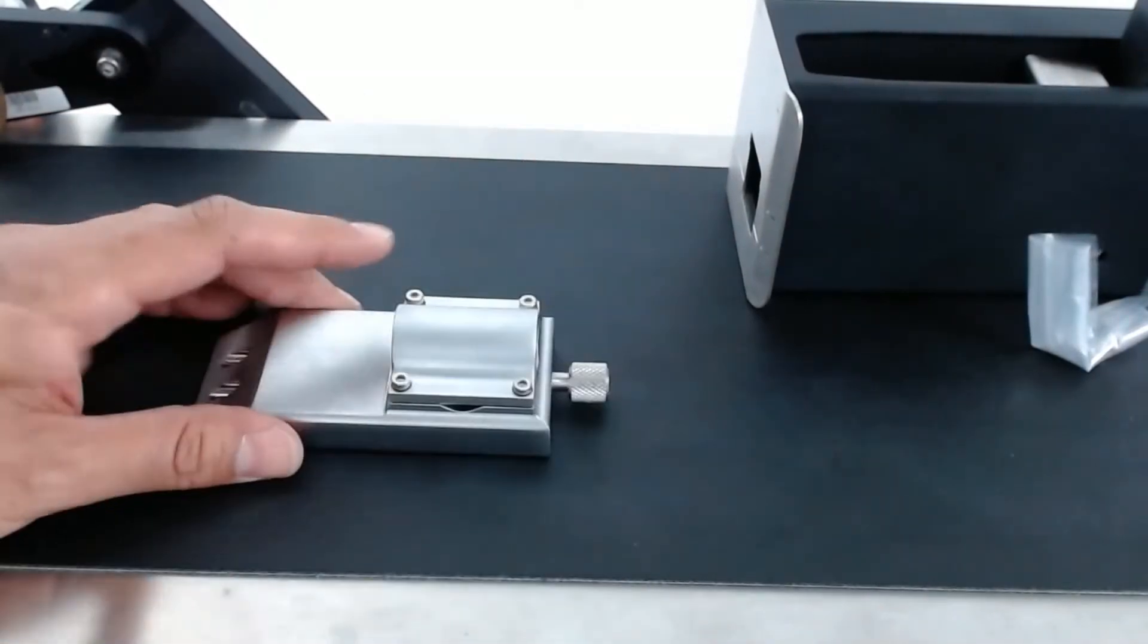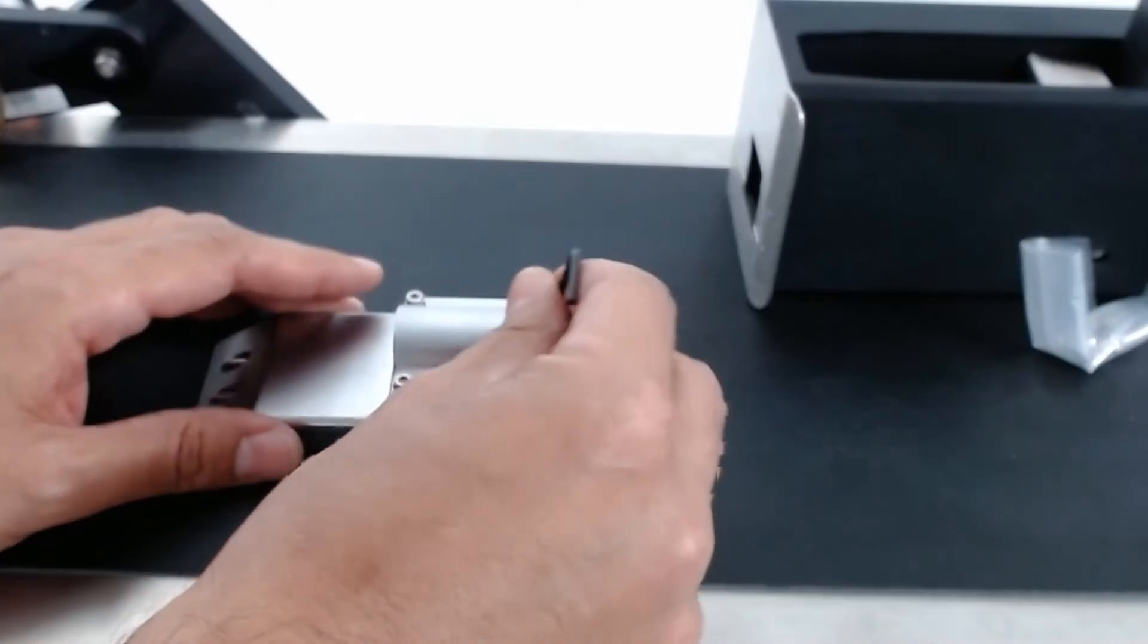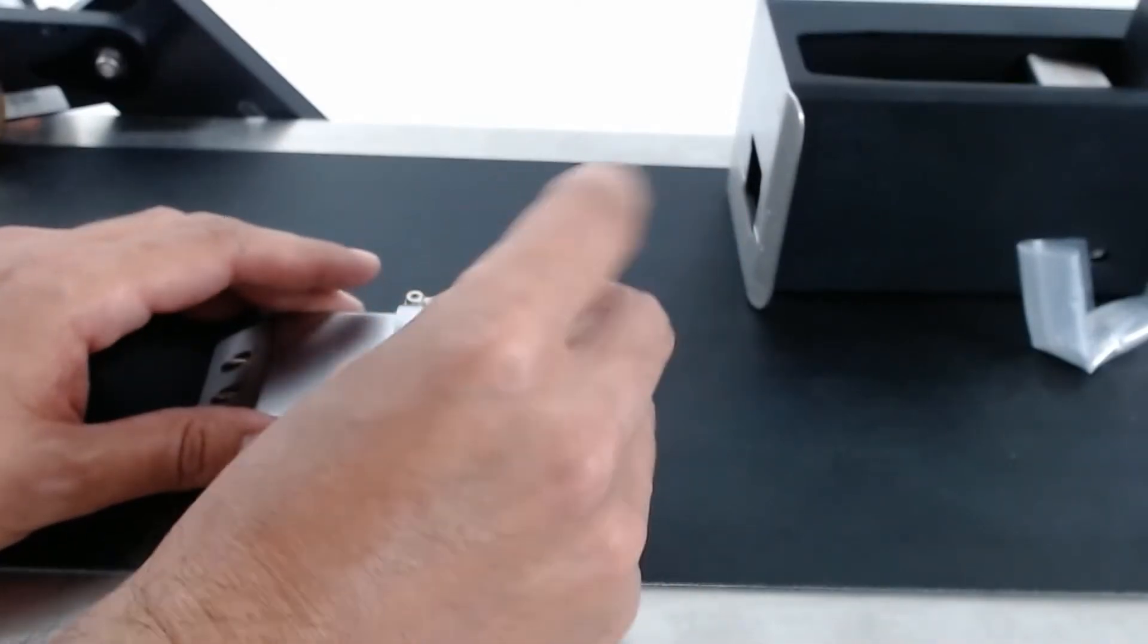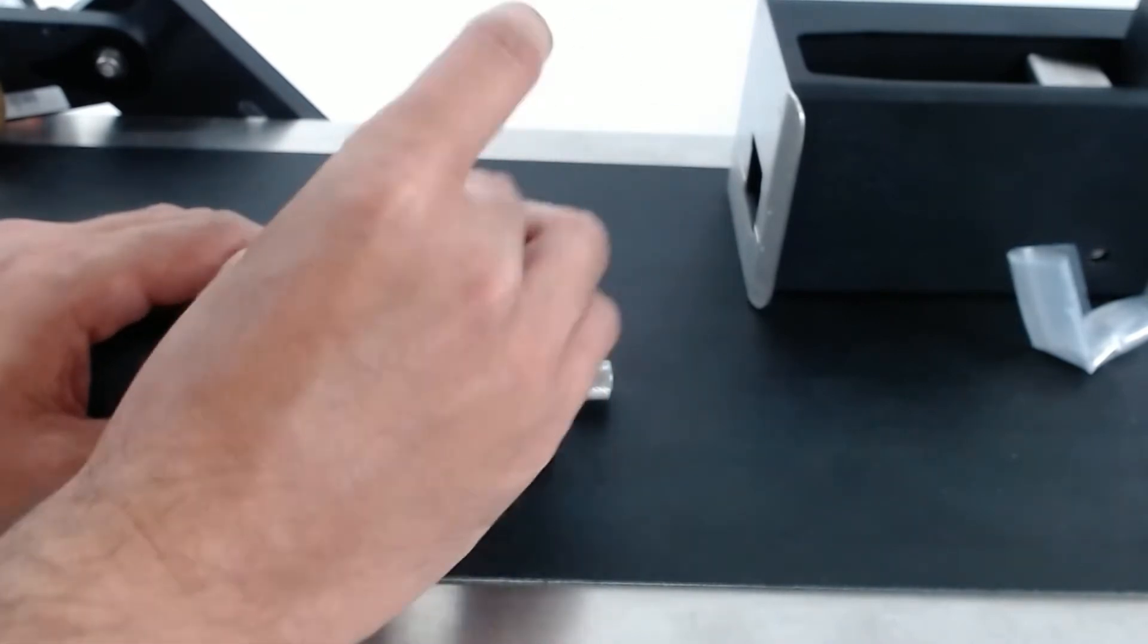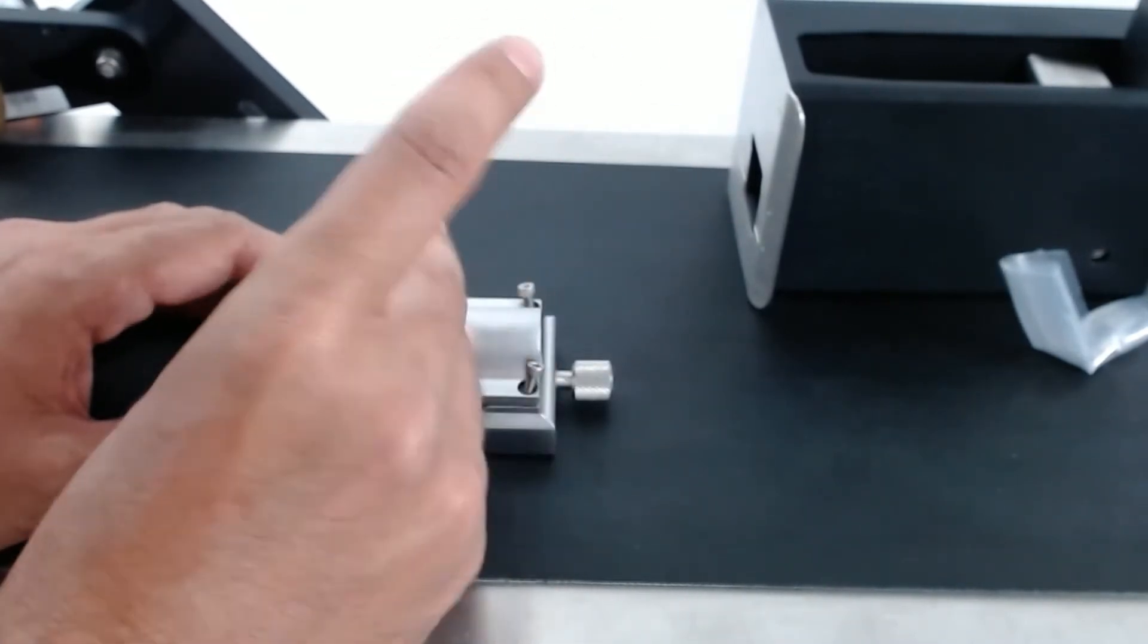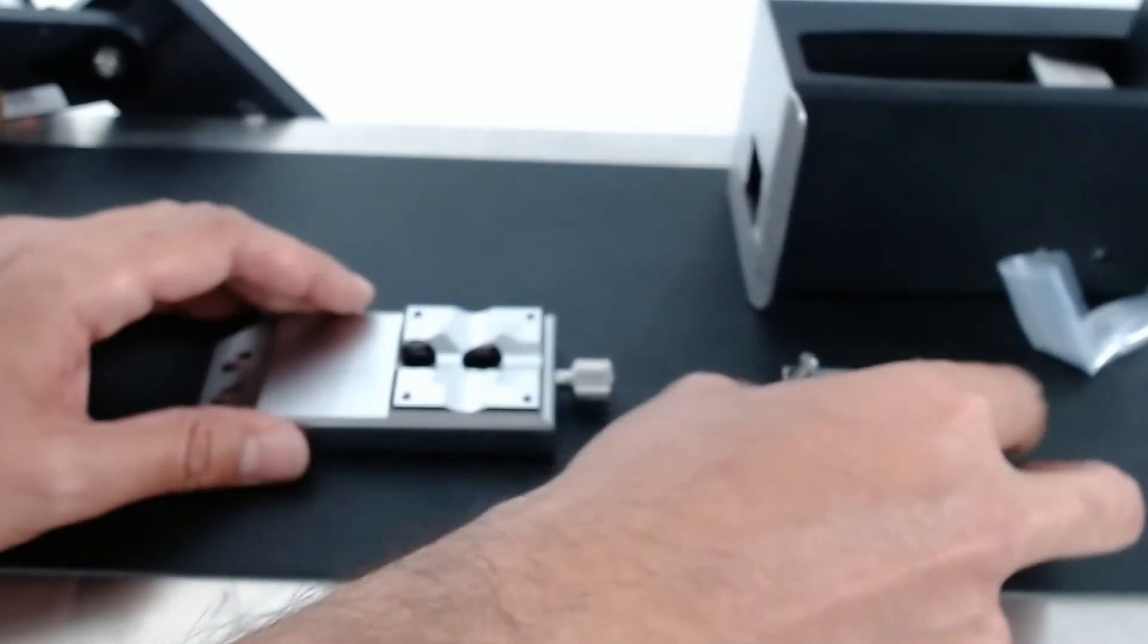Now we're going to go ahead and remove this clamp right here and it comes with the allen keys you need. So just go ahead and remove these screws from the top. Great, now just lift it off and set it aside for now.